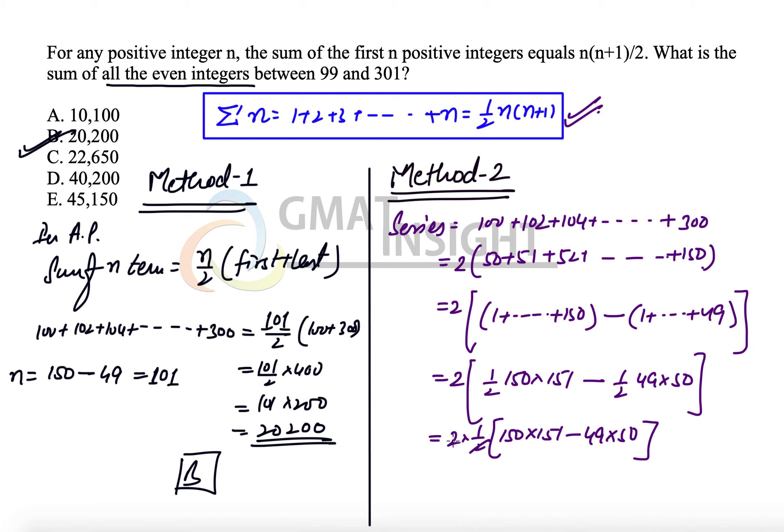It's only the matter of some calculations and the final result we have once again got is 20,200. Once again, we have option B as our correct answer.